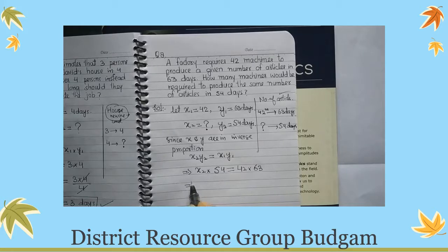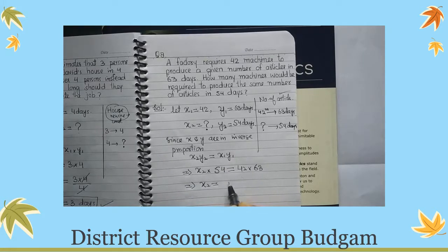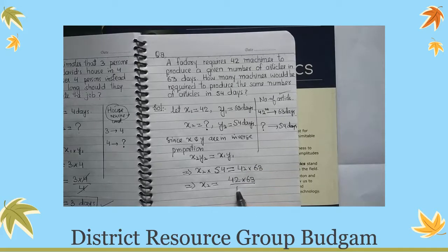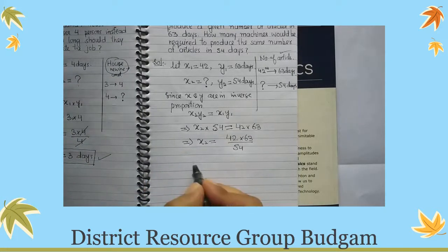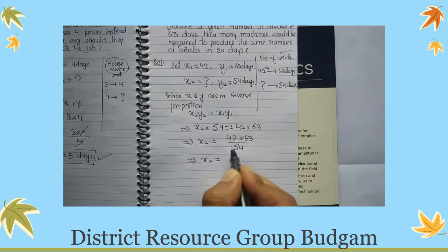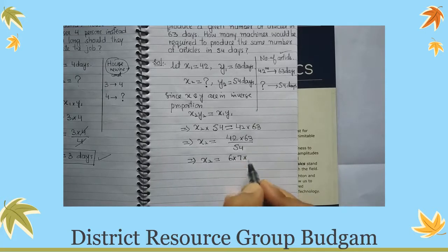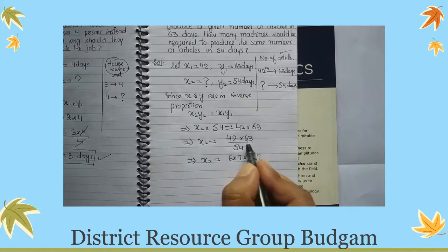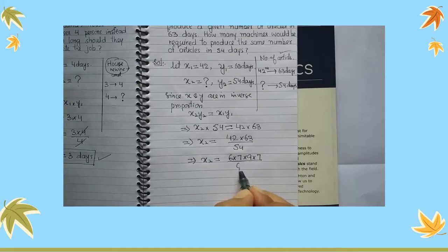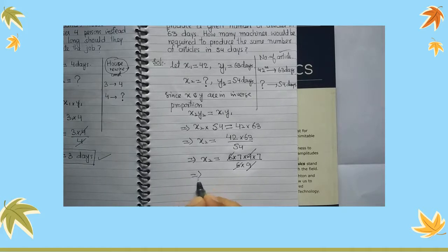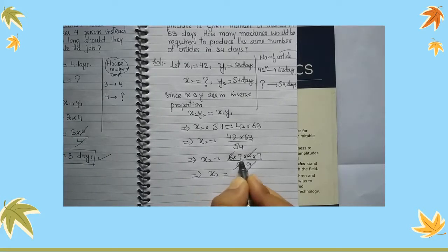This gives x2 kya banega? 42 into 63, yeh 54 jab equal ke RHS mein aayega, toh it will be here divided. X2 equals, aap isko factorize kar lenge, this is 6 into 7, yeh ban jayega 9 into 7, and 54 bhi hoga 6 into 9. Dekho yeh cancel hua, yeh 6 bhi cancel. Toh x2 kya nikla? X2 will be 7 into 7, it is 49.